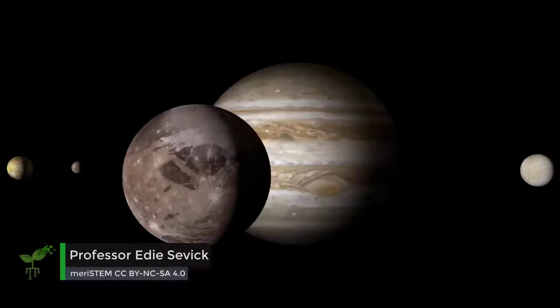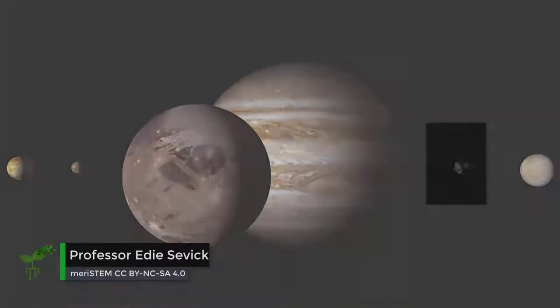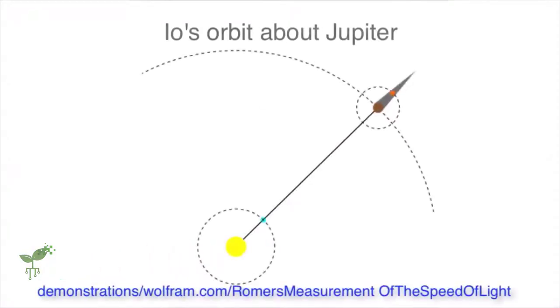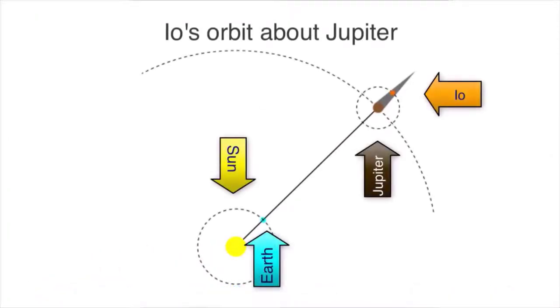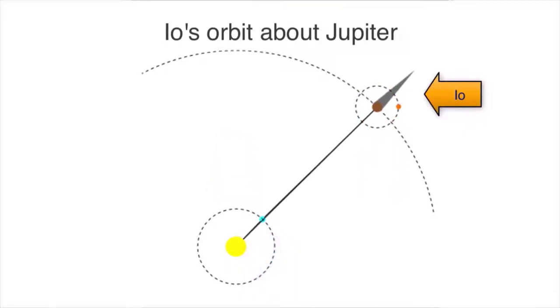One of these moons is Io. Galileo and others used their telescopes to determine the time that it takes Io to orbit Jupiter, starting from the disappearance of Io behind Jupiter's shadow.